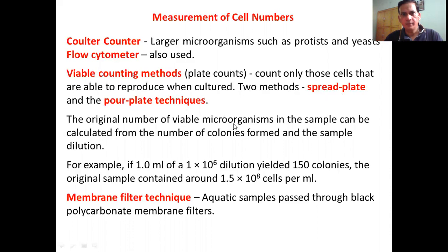The original number of viable microorganisms in a sample can be calculated from the number of colonies formed and the sample dilution. For example, if 1 ml of a 1×10⁻⁶ dilution gives 150 colonies on an agar plate, the original sample contains 1.5×10⁴ cells per ml.